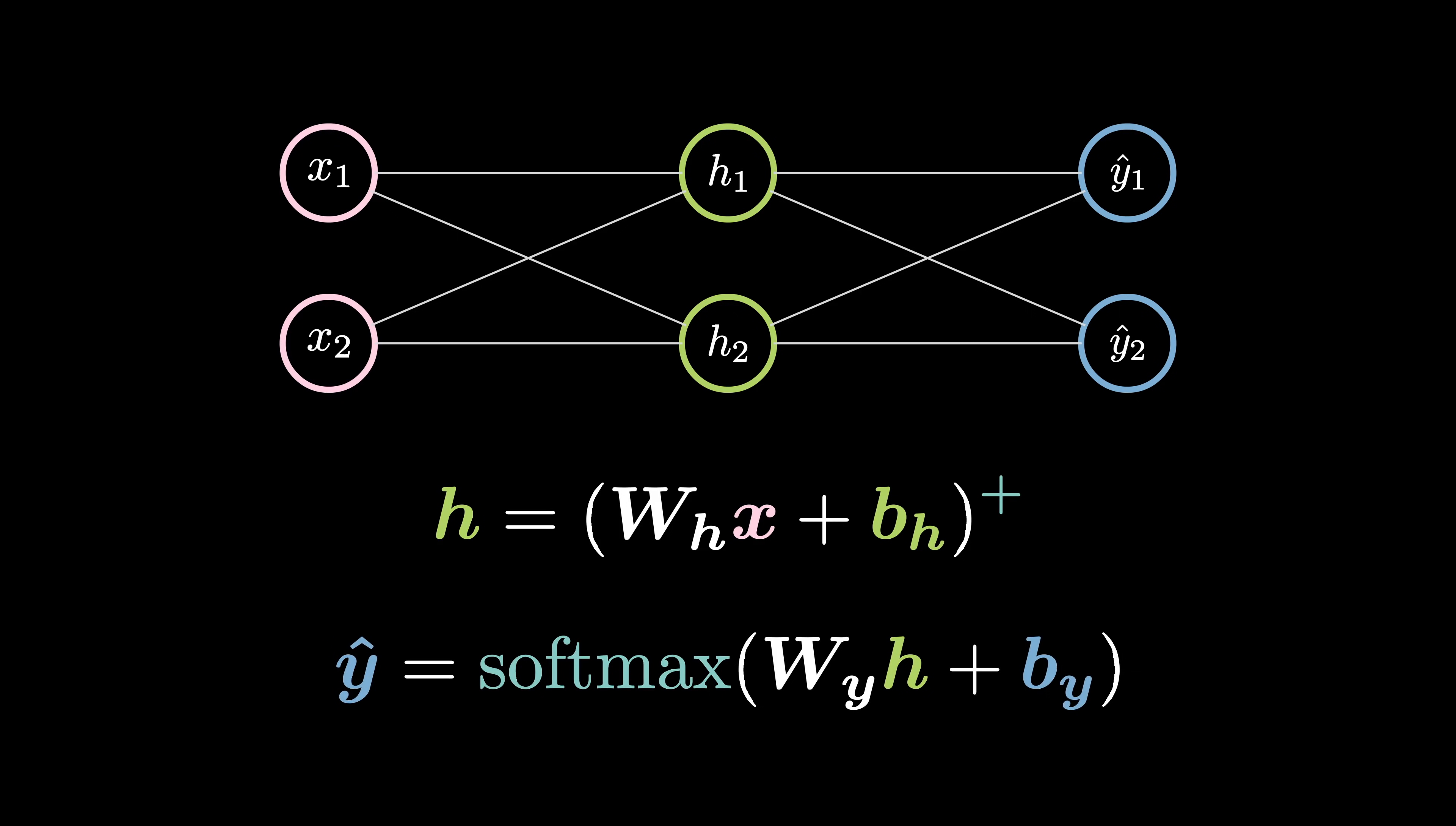It's written as the weight matrix times the input plus a bias passed through the activation function. For the hidden layers, let's use ReLU, but for the final layer, I'm going to introduce a new activation function, softmax.